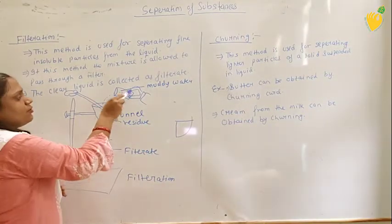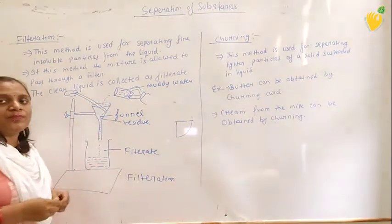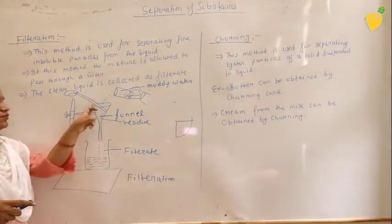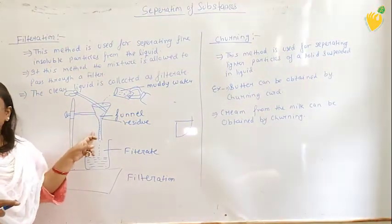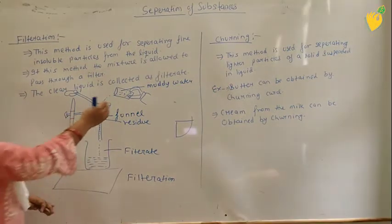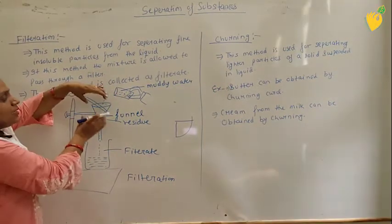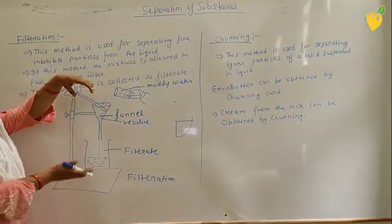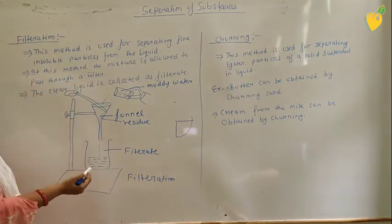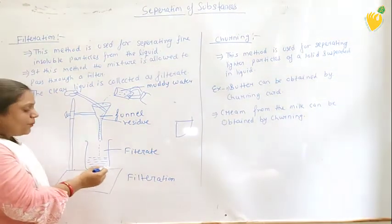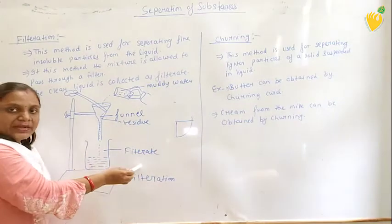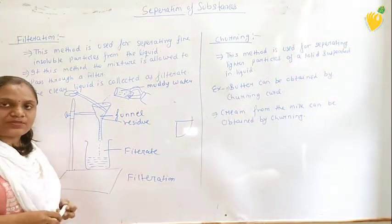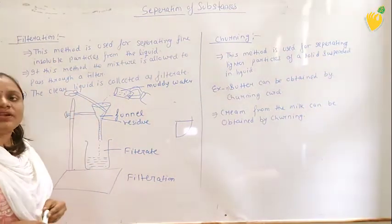Now we take a mixture — suppose this is a mixture of mud and water. When the mixture of mud and water passes through the conical funnel, all the solid particles are left in the filter paper and all the liquid filters out. The clear solution obtained in the beaker is called filtrate, and the solid part left in the funnel is called residue. This whole process is called filtration.